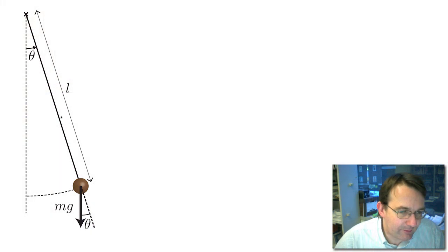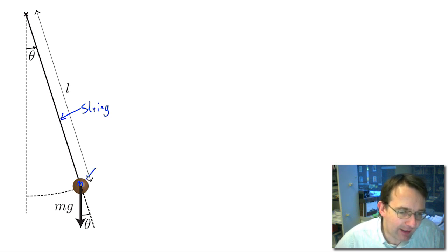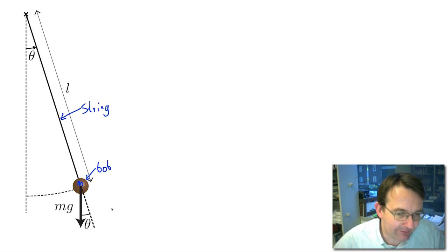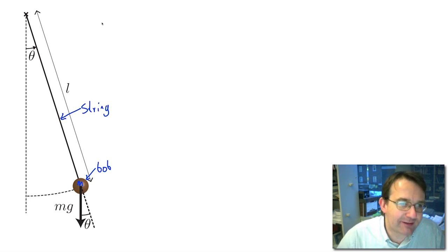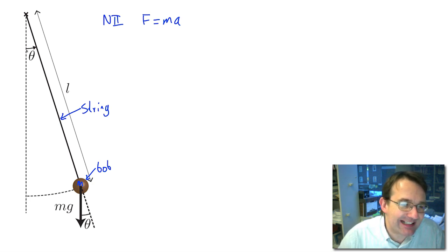So let's take a look at that. This is our pendulum; the string has a length L, and at the end we have the bob with mass m. For a simple pendulum we treat this as a point mass on the end of the string. When we did the mass-spring system, the first thing we did was apply Newton's second law — force equals mass times acceleration. Here, instead of a linear displacement we have an angular displacement from equilibrium.